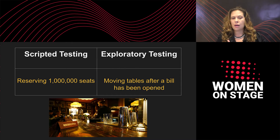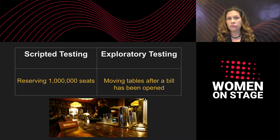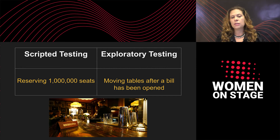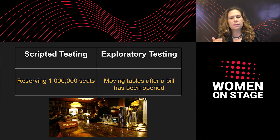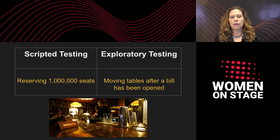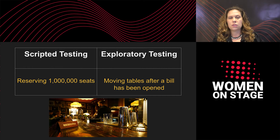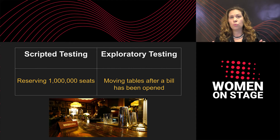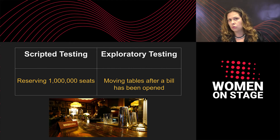Our third example would be related to the seating and reservations function. During scripted testing, we might test a scenario such as trying to reserve a million seats and expect to get a suitable error message saying: the number of requested seats is too big, please choose a valid number of seats.